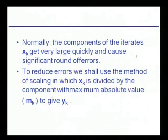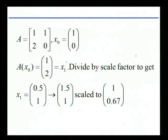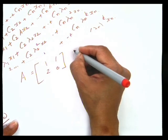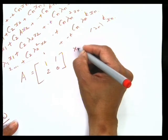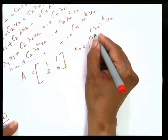Let us see this in an example. Starting with the matrix A = [[1, 1], [2, 0]], as a first approximation we take x0 = [1, 0].